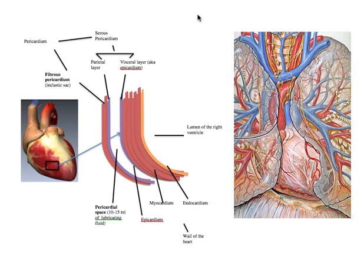In this video we're going to discuss the pericardium. The pericardium is a sac that surrounds and protects the heart, and it's important to have a thorough understanding of the anatomy of the pericardium because in situations such as chest trauma, the pericardium can become compromised, which can then affect the structure and function of the heart.